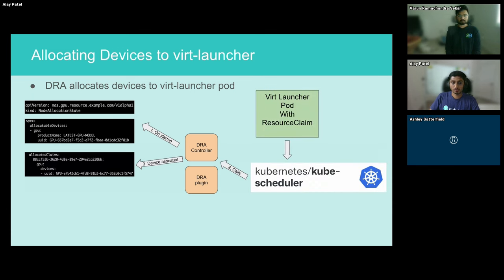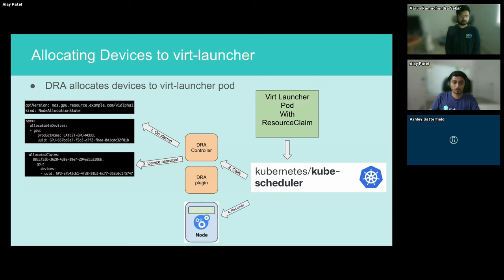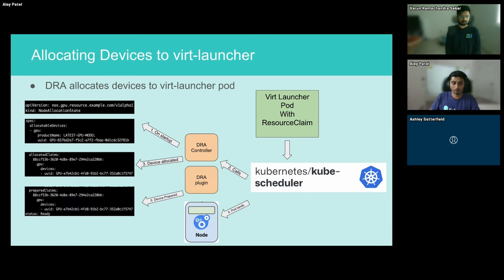Once the Virt Launcher pod is created with the resource claim, the scheduler looks for nodes that can satisfy the claim and picks a node. Once the scheduler picks a node, the device is added to the allocated claims field in the node allocation state object. The pod is then ready to land on the node. Once the pod lands, kubelet calls the NodePrepareResources gRPC call to make the device finally ready for the pod — this is how the GPU can be accessed in the Virt Launcher pod.